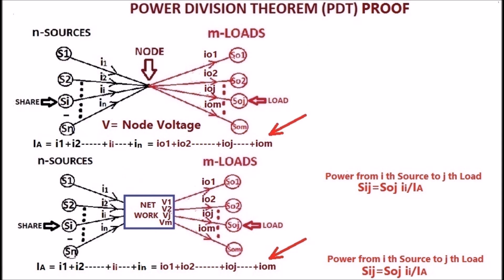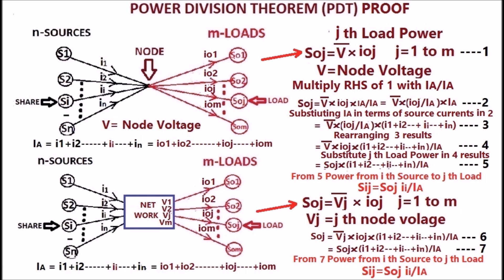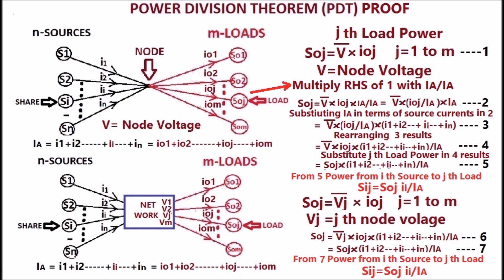As shown in the display. The j-th load power SOJ is equal to the complex conjugate of the load voltage multiplied by the load current IOJ. The j-th load voltage is V in the case of a node, and VJ in the case of a network, as shown in the display. Equation 1 shows the j-th load power; multiply the right-hand side of equation 1 with the ratio of i-a by i-a. Substituting i-a in the numerator in terms of source currents results in the j-th load power SOJ equal to V conjugate multiplied with IOJ multiplied with i-a by i-a.